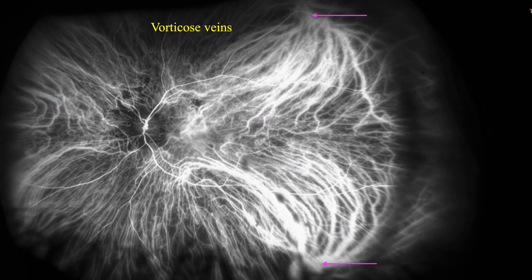These choroidal blood vessels pass through the sclera through four holes located in the center of each quadrant. The choroidal circulation is distributed in the form of a spiral, a vortex, which converges in these scleral holes. It is because of this spiral, vortex-like appearance, that the veins exiting the eyeball through these holes are called vortex veins.